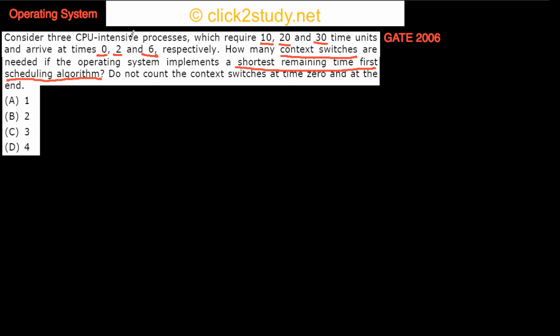We have three CPU processes requiring 10, 20, and 30 time units, arriving at times 0, 2, and 6. We have to tell how many context switches are needed. A context switch is when one process is running and then gets replaced by another process. With the Shortest Remaining Time First algorithm, the process with the shortest remaining time runs first.